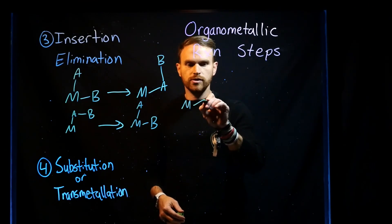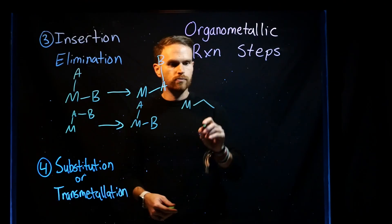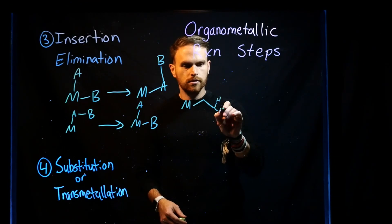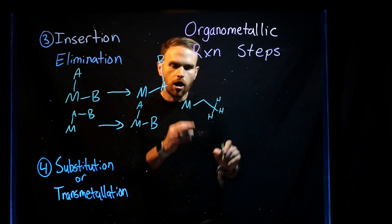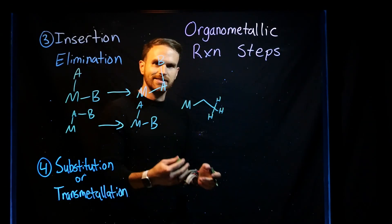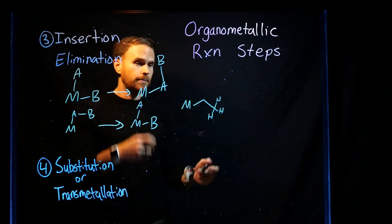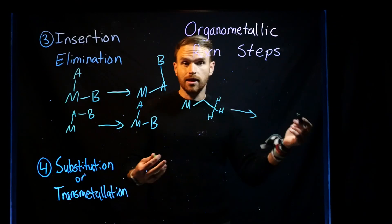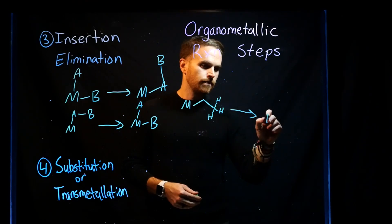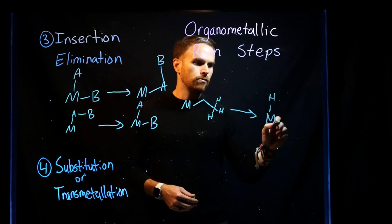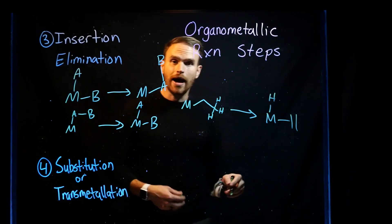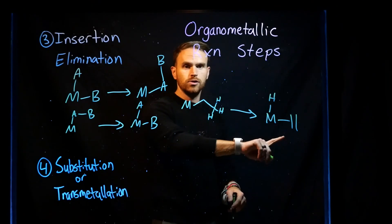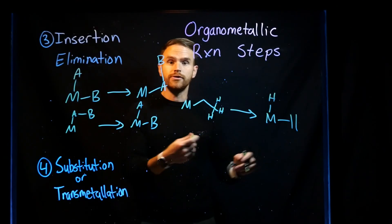Metals that are attached to alkyl groups often have several hydrogens on that alkyl group. Beta-hydride elimination is when one of these hydrogens gets eliminated to the metal, generating a new alkene. So beta-hydride elimination is going to produce a new type of double bond.